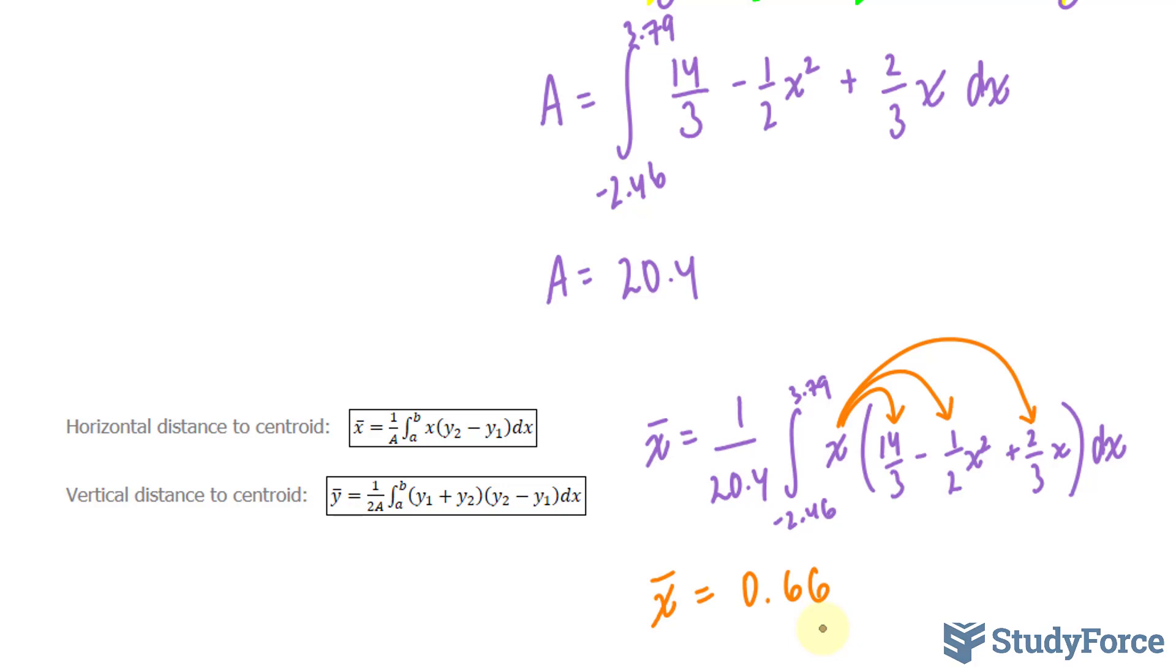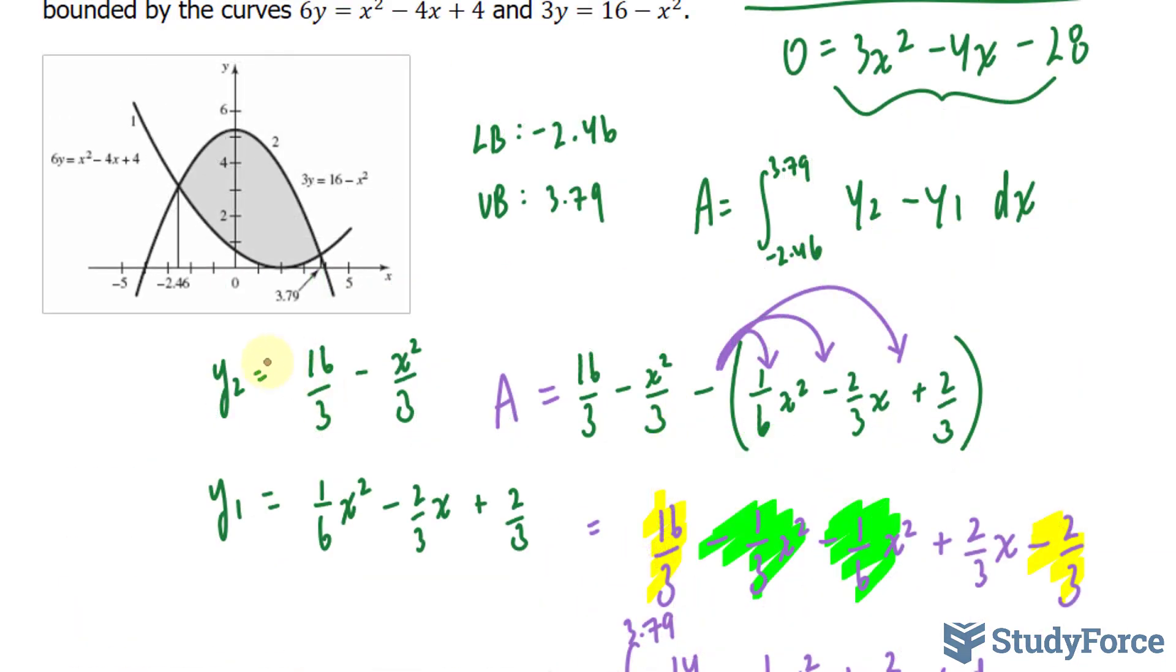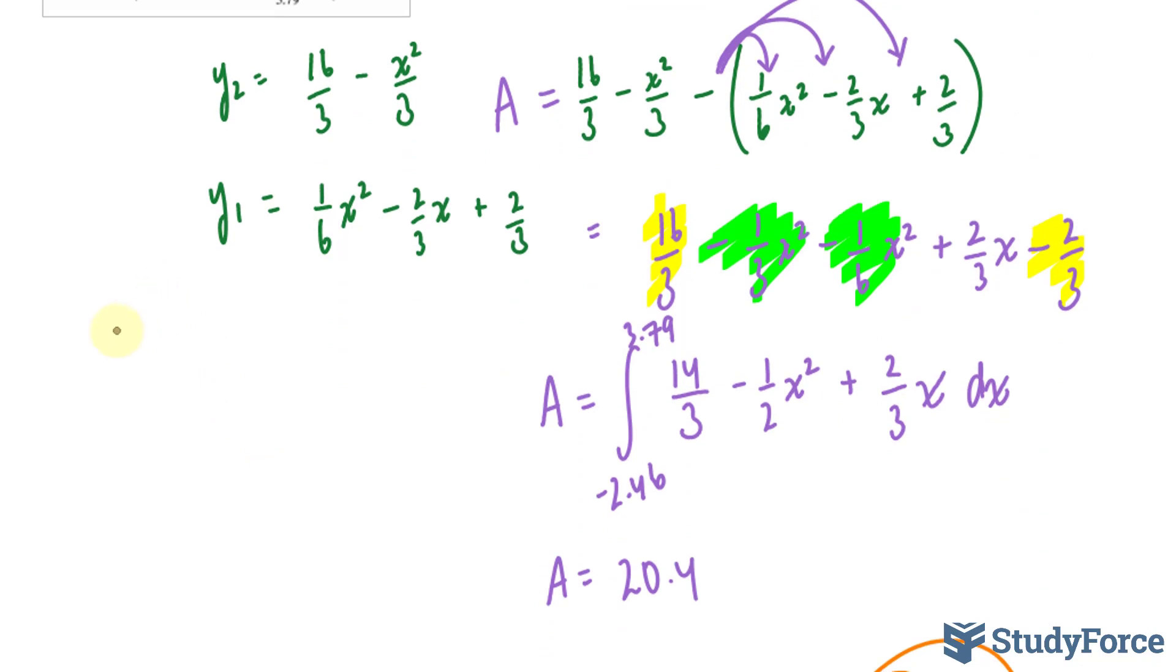Now, I need to repeat this process using the following formula. Before I use this formula, I'm going to find out what y1 plus y2 is. I already know what y2 minus y1 is. I'll just repeat using this function. But I need to find out what y1 plus y2 is. So, I'll go up here and add up this function with that function. Here's what we get. y2 plus y1 is equal to the following. We have 16 over 3 minus x squared over 3 plus these three terms. And I'll highlight the like terms for clarity's sake.